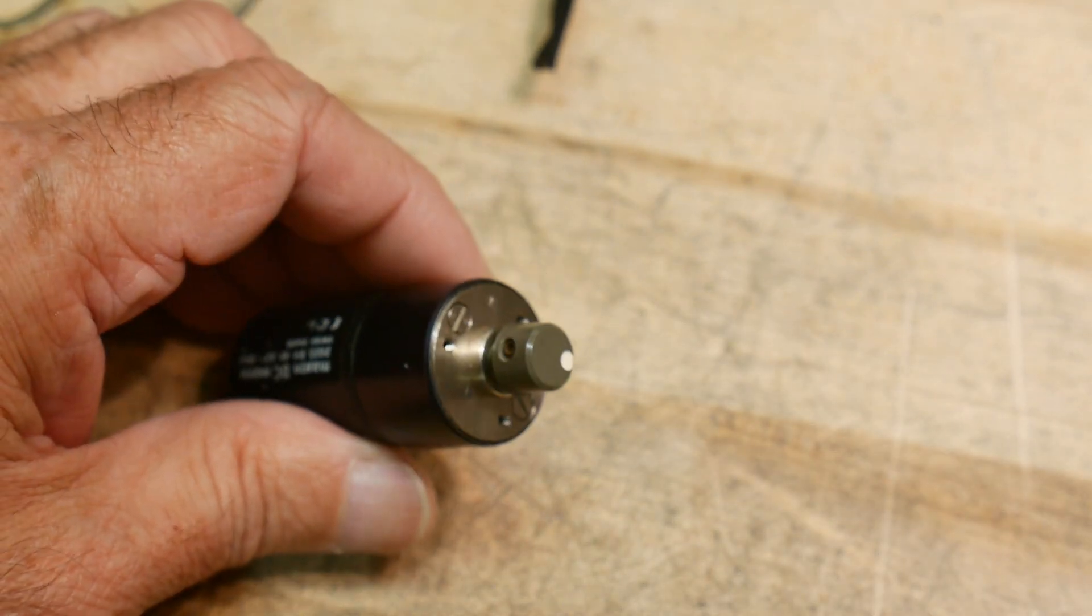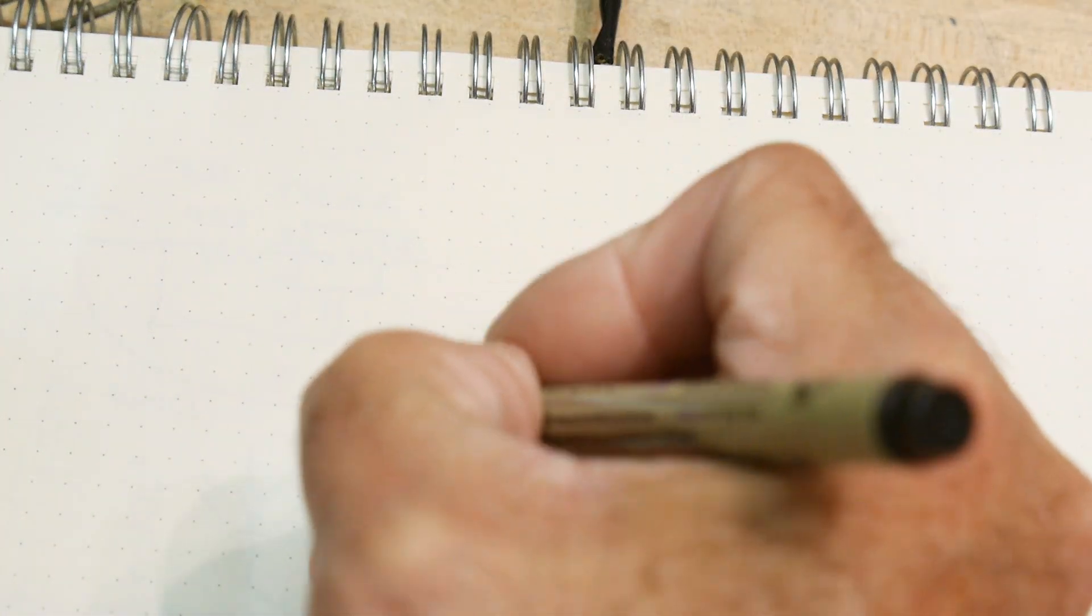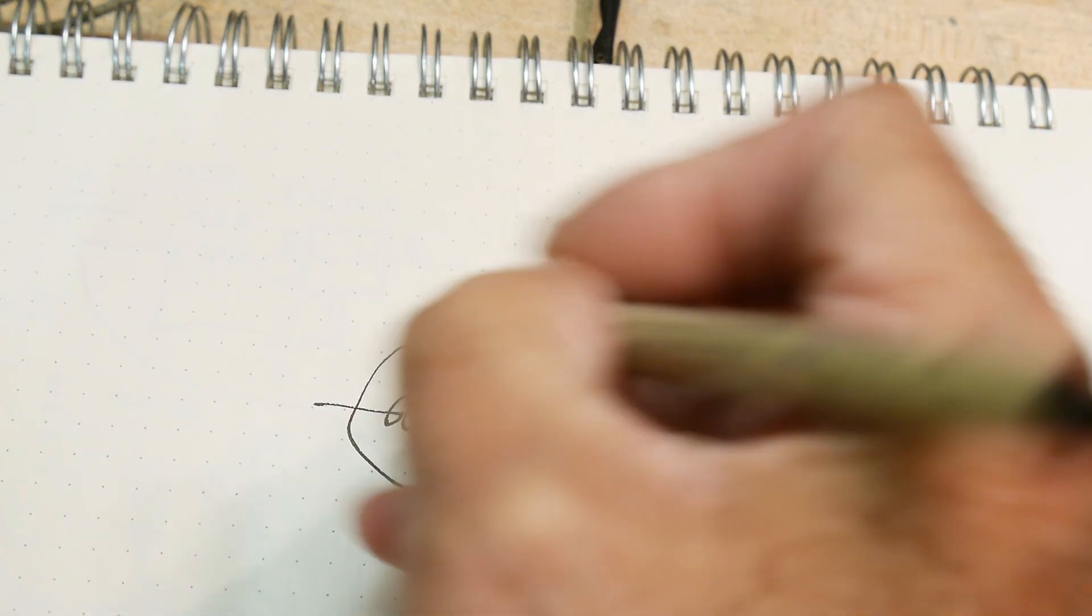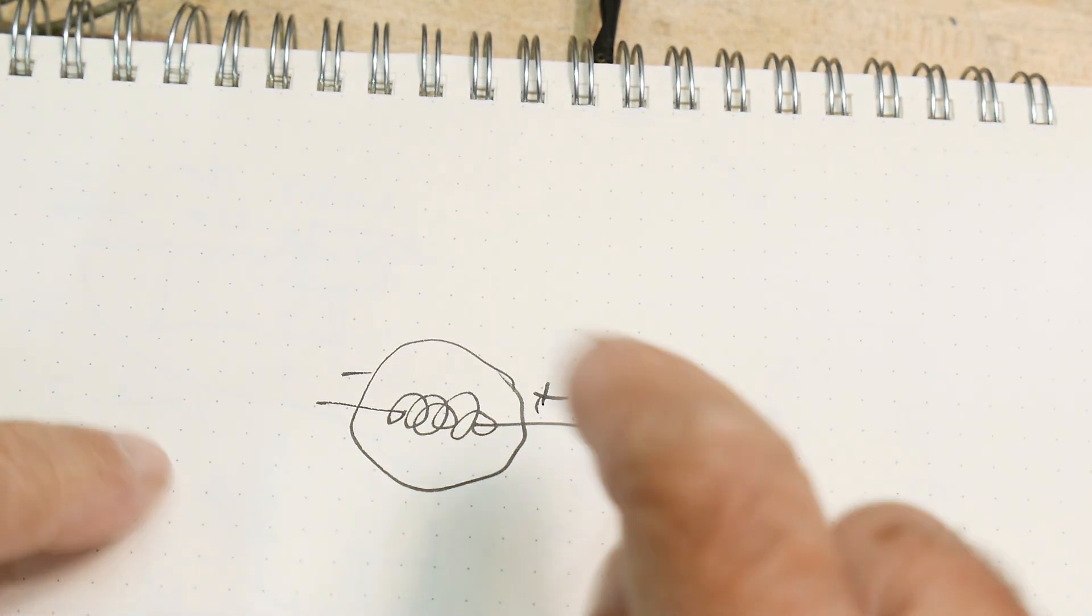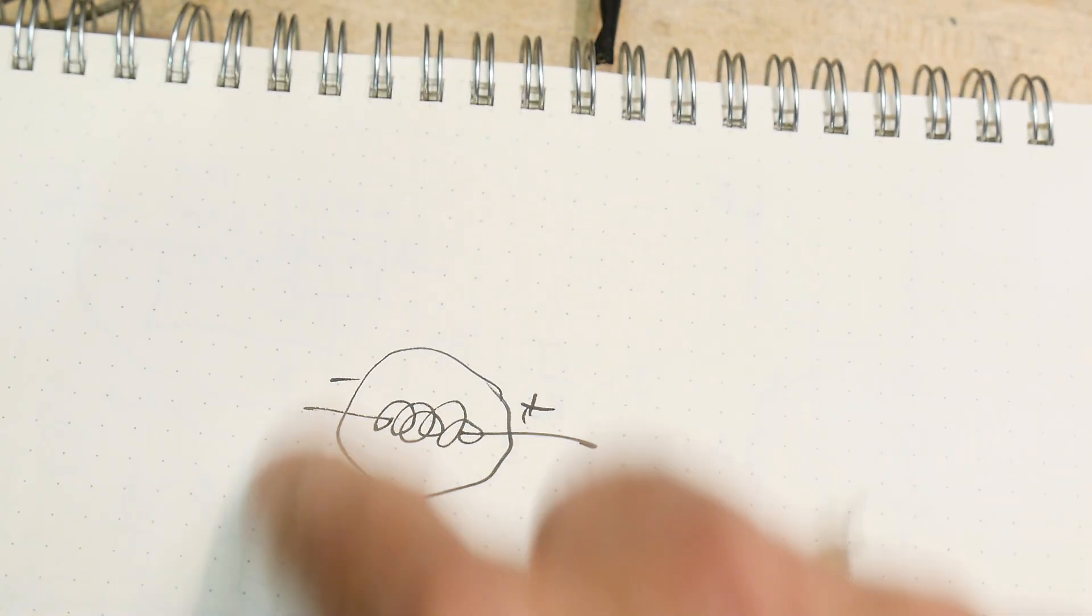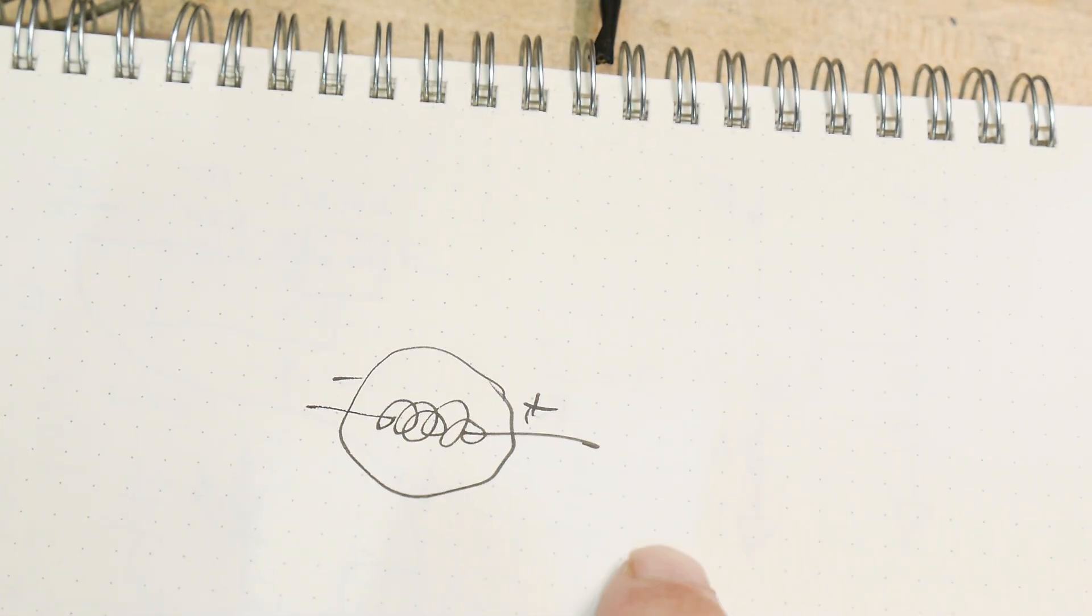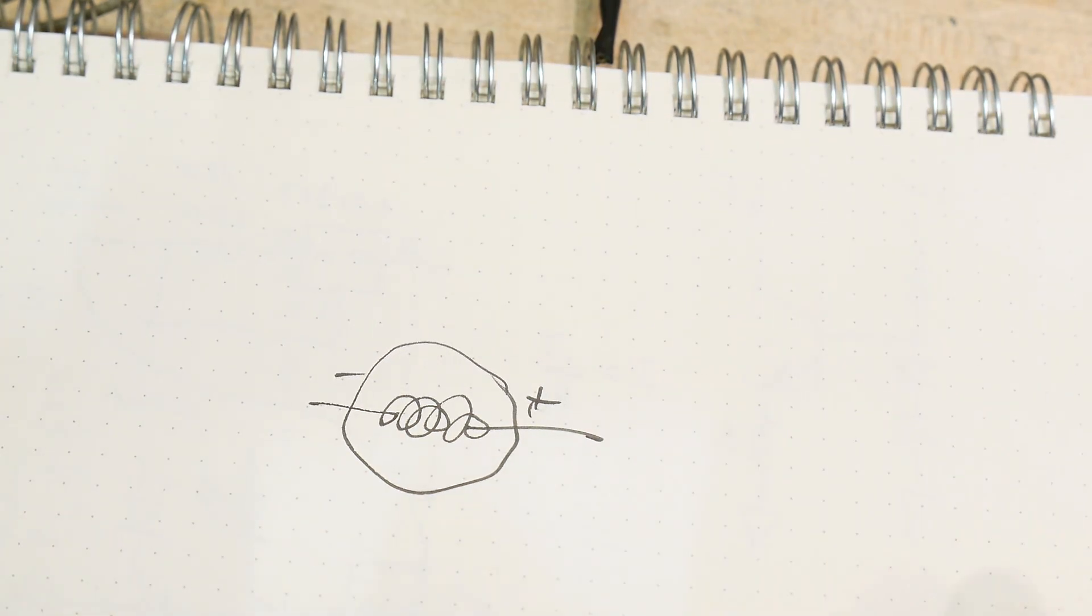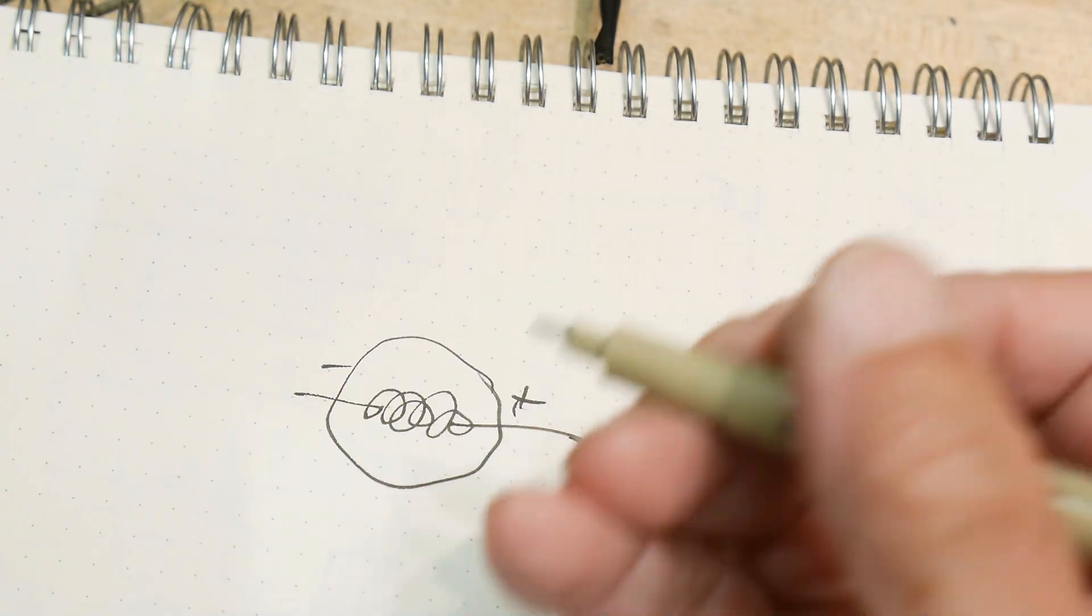All right, so you have a motor, it's got windings inside and there's a plus and a minus. If you hook it up plus and minus it goes one way and hook it up the opposite way it goes the other way, right? So clockwise is plus over here and counterclockwise it's plus over on this side.